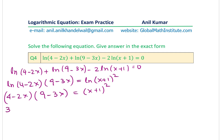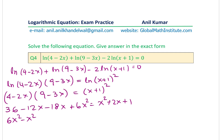Expanding the left side: 4×9 = 36, 4×(−3x) = −12x, (−2x)×9 = −18x, (−2x)(−3x) = +6x². So we get 6x²−30x+36. The right side expands to x²+2x+1.